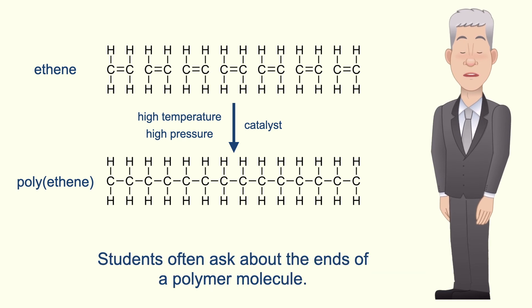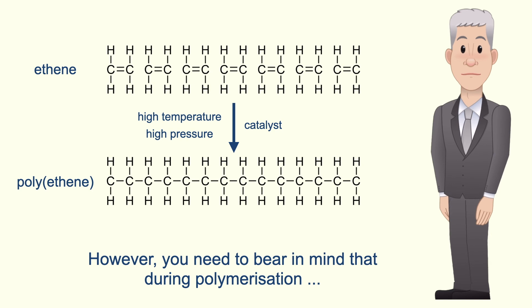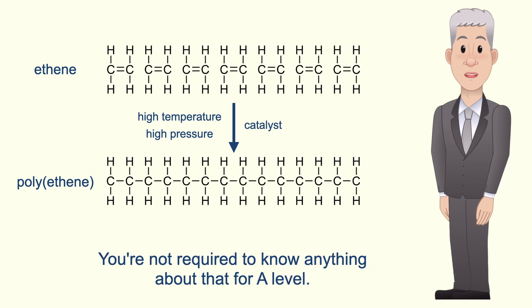Students often ask about the ends of a polymer molecule. It appears that the carbon atoms at either end only have three covalent bonds. However, you need to bear in mind that during polymerization, other molecules are added to cap the ends of the polymer chain. But you're not required to know anything about that for A-level.